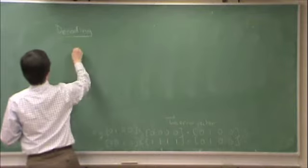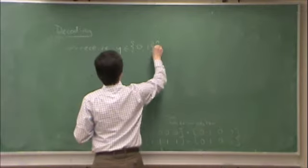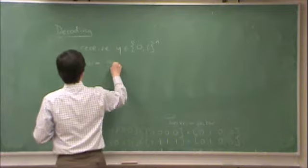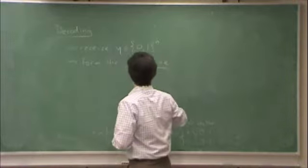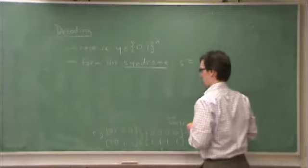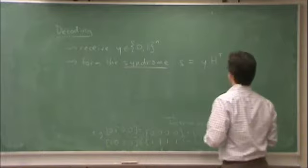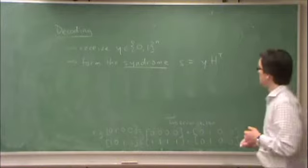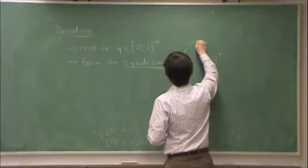So if we receive y and 0, 1 and the m, form the syndrome s, which is equal to whatever I receive. So the syndrome s will be a 1 by n minus k vector.